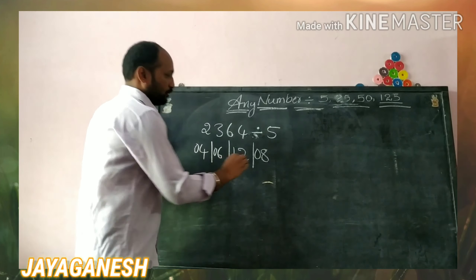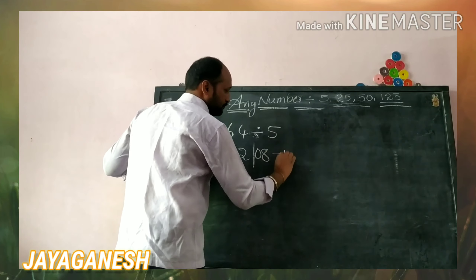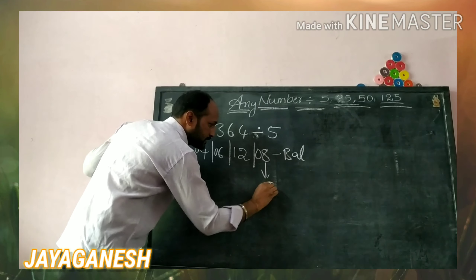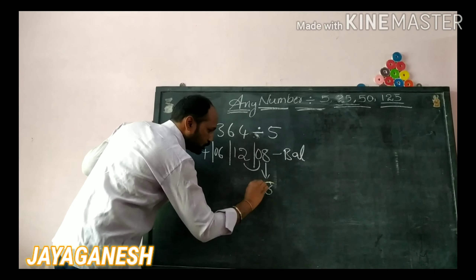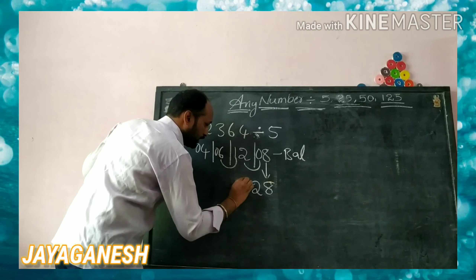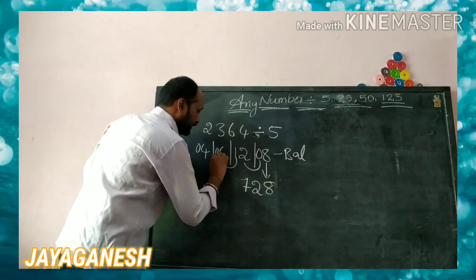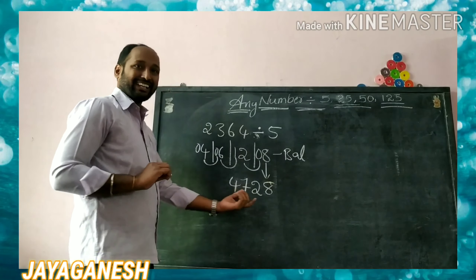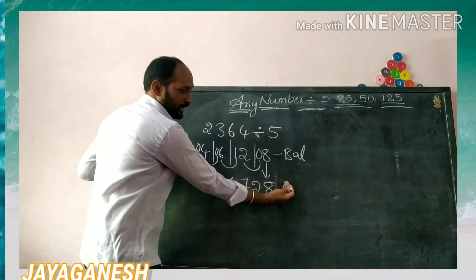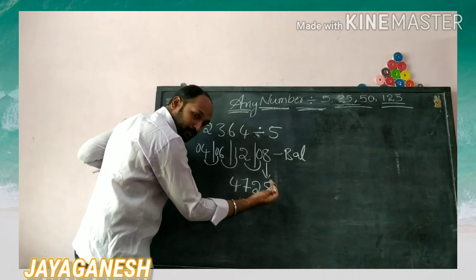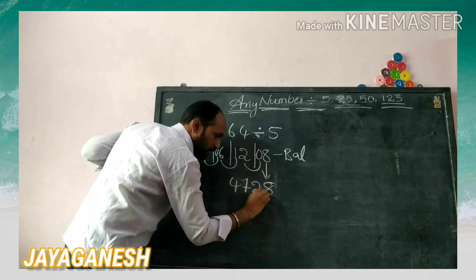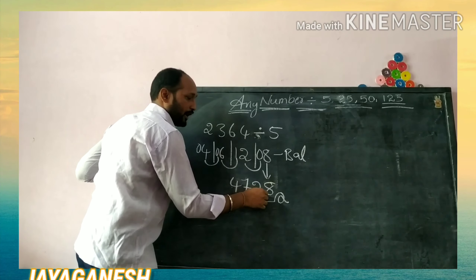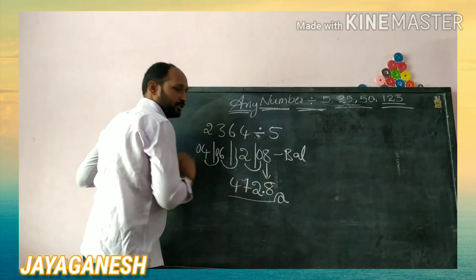Now apply the balancing rule. Drop the eight as it is and carry zero; then drop two and carry one, giving seven; and carry zero, giving four. After getting the answer, from the right side, after one digit keep a decimal point. Your answer will be 472.8.